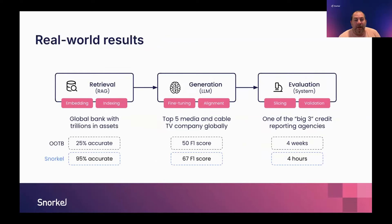In terms of real-world results, we have three examples of historical customers across different segments. The improvement depends on your use case. If you're working on something fairly simplistic, an out-of-the-box model might already be at 70–90% accuracy, and optimization might add 5–10%. But for something very specialized and critical to your business, an out-of-the-box model might be only 25% accurate due to lack of domain knowledge. After incorporating that knowledge, you could reach 95% accuracy — something you can put in production and that the business can rely on.